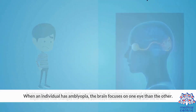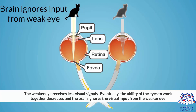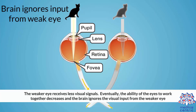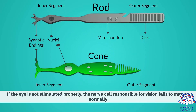When an individual has amblyopia, the brain focuses more on one eye than the other. The weaker eye receives less visual signals. Eventually, the ability of the eyes to work together decreases and the brain ignores the visual input from the weaker eye. If the eye is not stimulated properly, the nerve cell responsible for vision fails to mature normally.